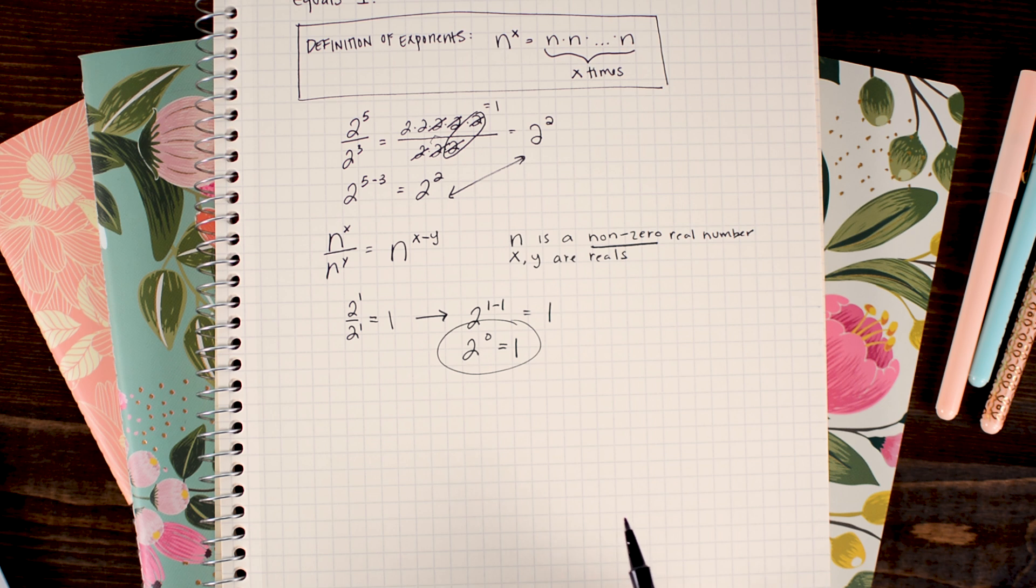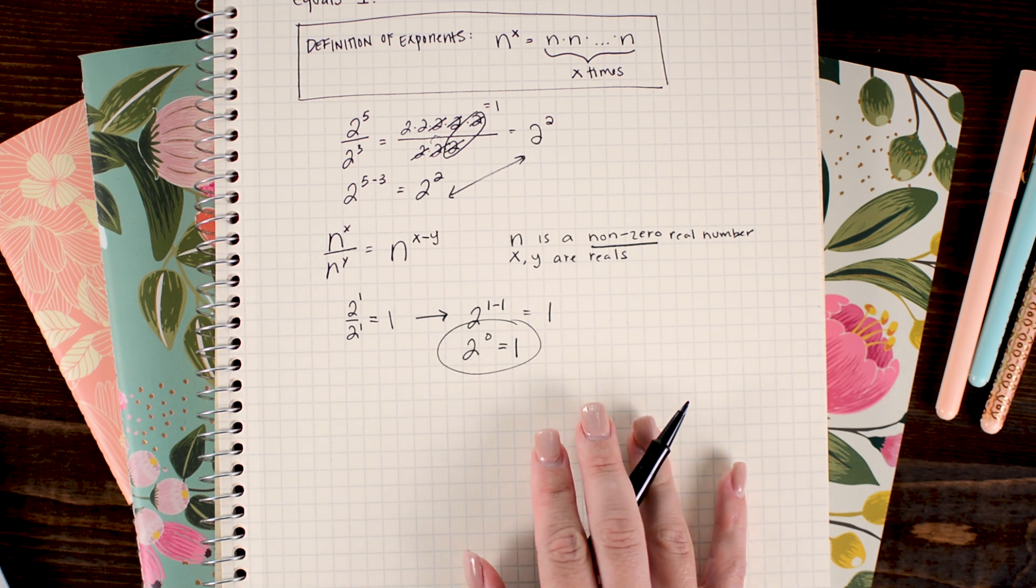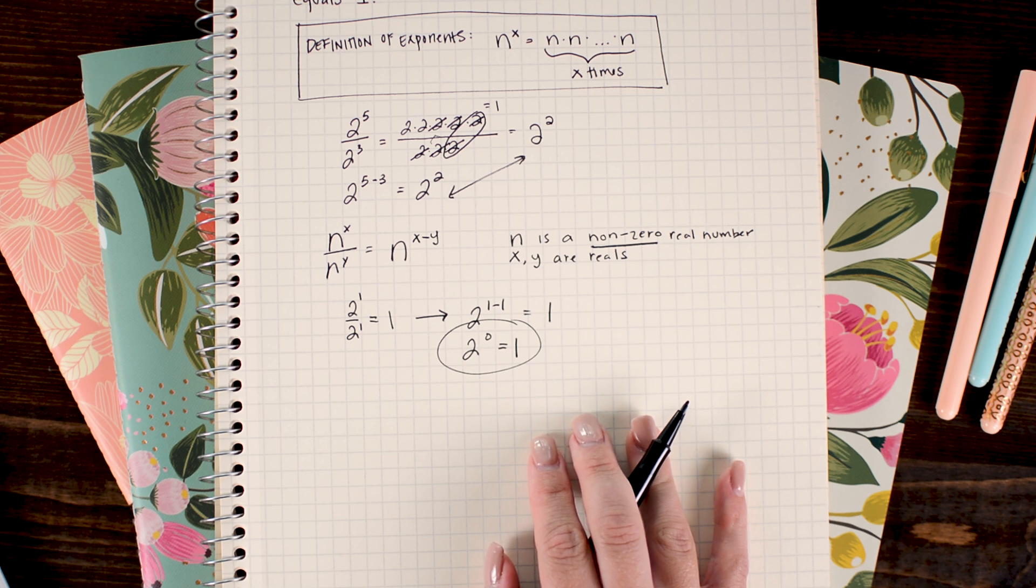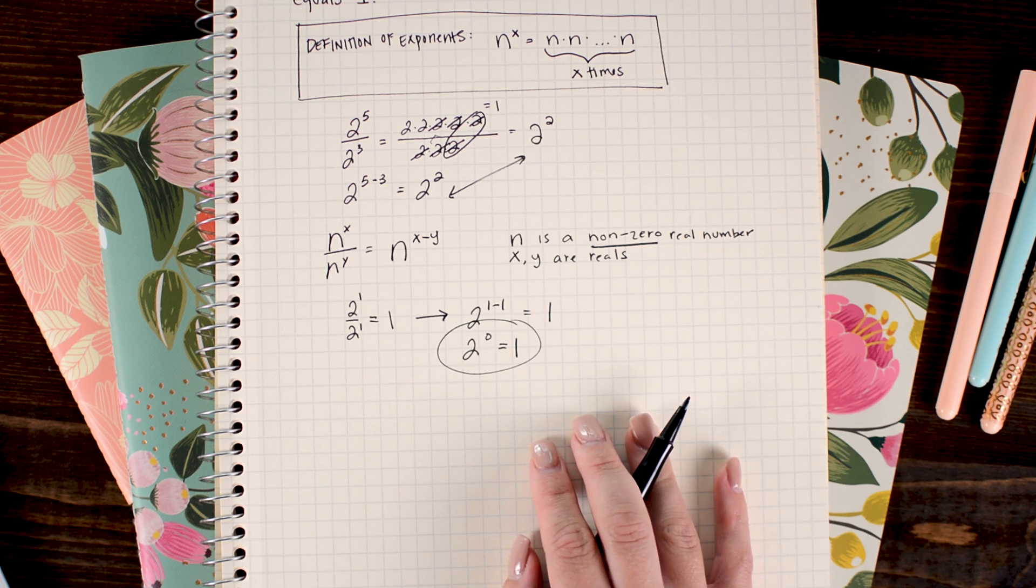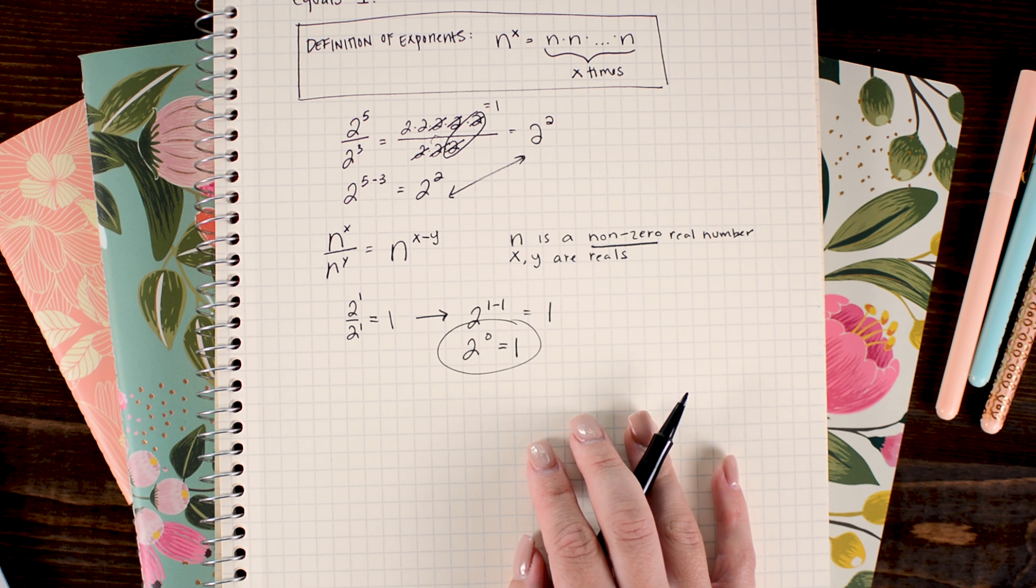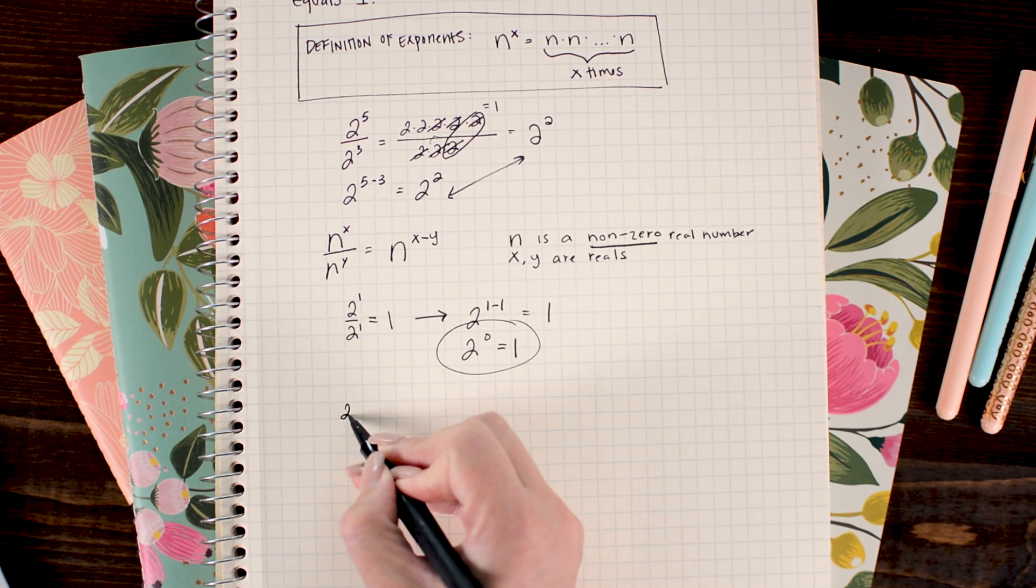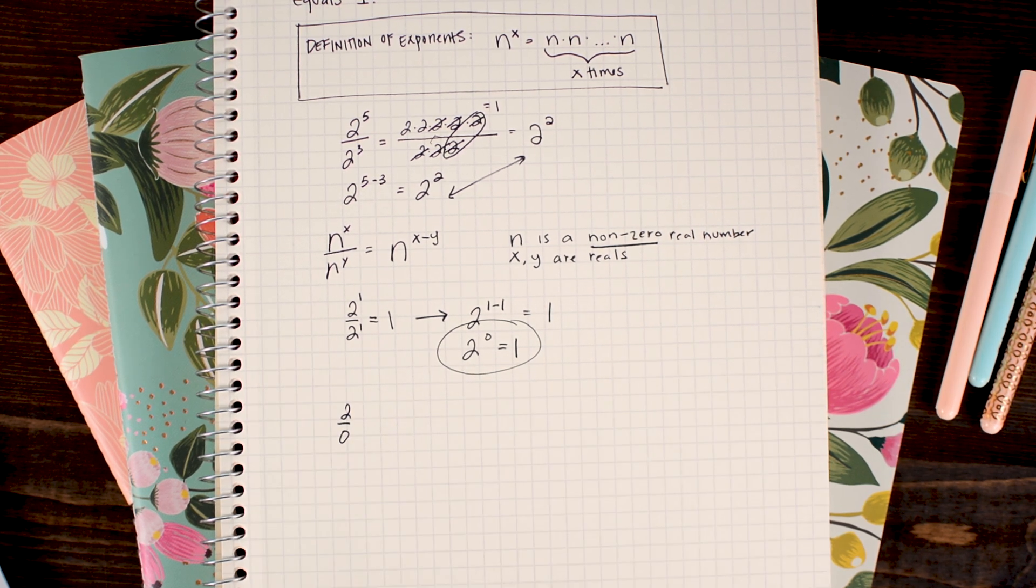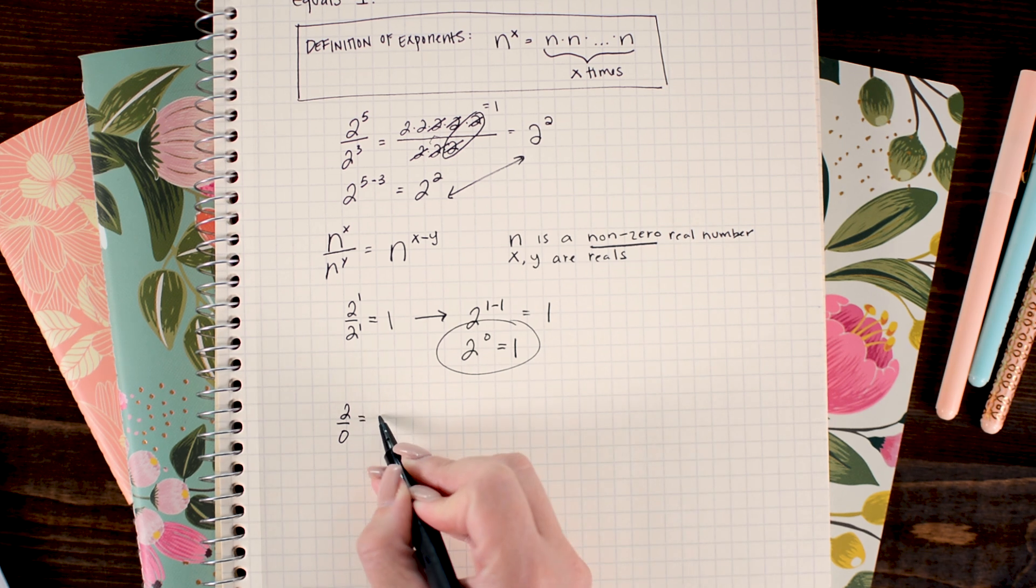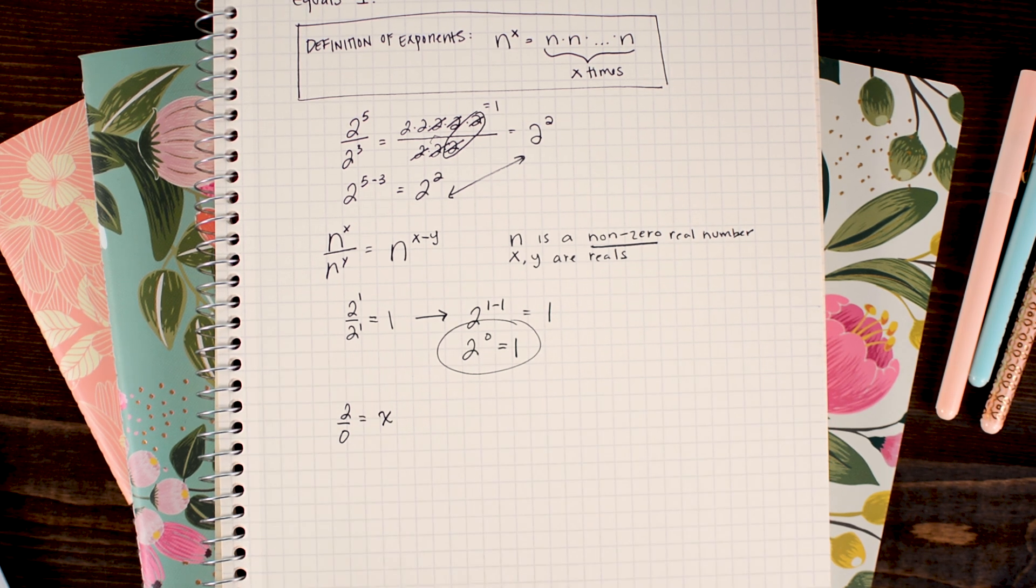I said only non-zero real numbers, and we need to figure out why 0 doesn't work. So to do that we need to think about 0 and what happens when we divide 0. Now we know from elementary school, our teachers, our calculator, that we can't divide by 0.